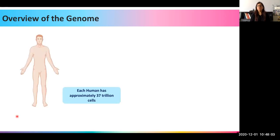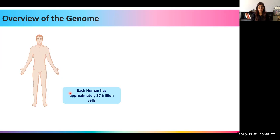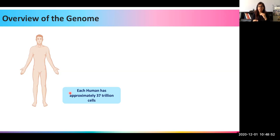Almost everyone has heard of the human genome, and most know it has been sequenced, but how do we understand what a human genome actually is? Each human has approximately 37 trillion cells, and each cell knows exactly what to do. For example, a liver cell knows it has to remove toxins from the body, and a brain cell knows it has to store memories. You can understand the genome as a language or code that encodes a set of instructions telling each cell what to do and eventually building a whole human being.